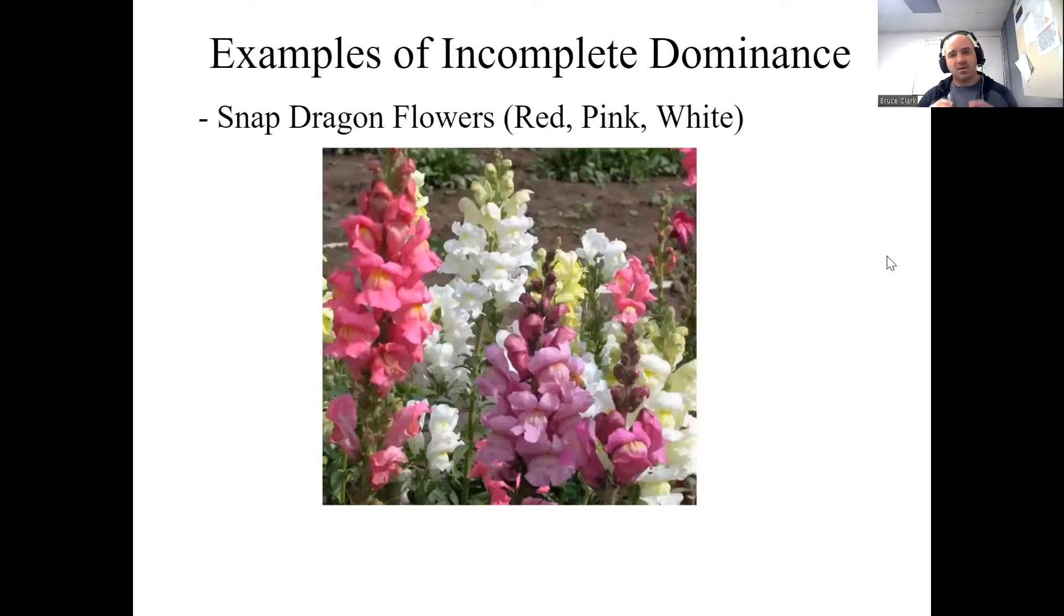Best example I can talk about are flowers. You take a red flower, cross it with a white flower, and you get a pink flower for this particular snapdragon species. So anything that is heterozygous results in a third phenotype. This is where we actually see some blending occur.